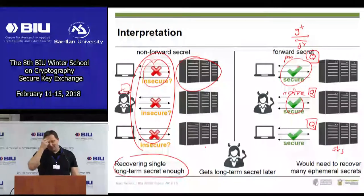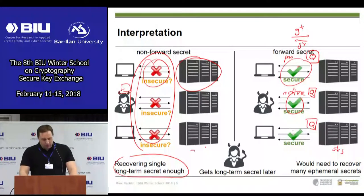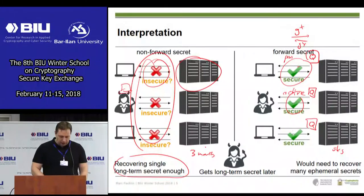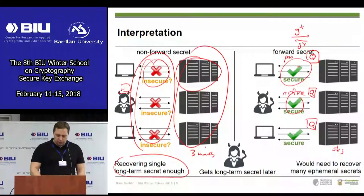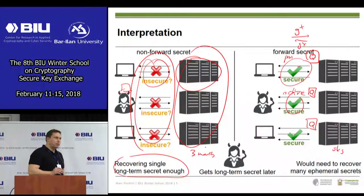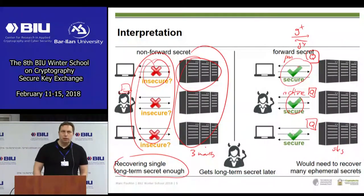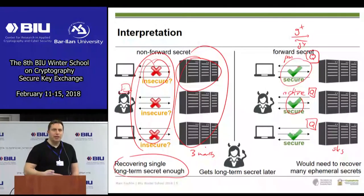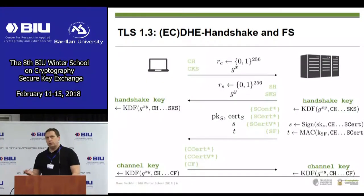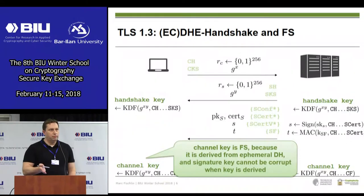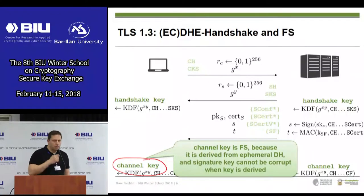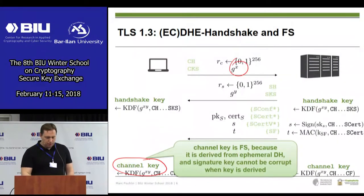TLS 1.3 does have forward secrecy. The channel key is computed over an ephemeral Diffie-Hellman key exchange using g^x and g^y. If you later break the signing key — the long-term secret on either side — it doesn't help you recover the channel key. It would help you authenticate yourself in a future protocol execution, but forward secrecy doesn't give you security in that regard. Even if you later have the signing key, this protocol run has already completed.